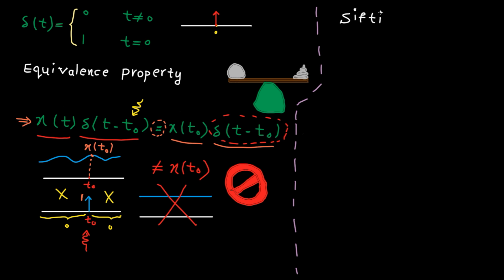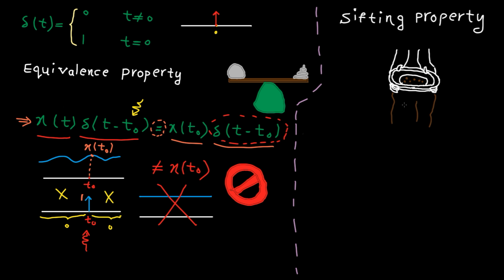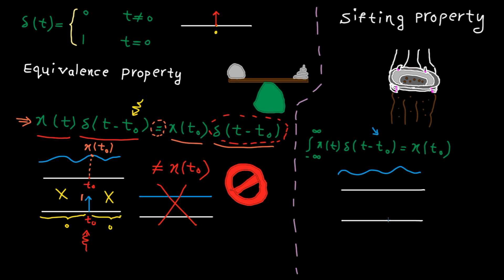Now let's look at the second property of the unit impulse function: the sifting property. As the name shows, you can use this property to sift out some parts of a signal. The integral from minus infinity to plus infinity of x of t multiplied by a delta function shifted by t0 is equal to x at t0. Here is x of t, and here is a delta function shifted by t0. Again, the product is zero everywhere except at one point, t equal to t0, where the product is x at t0 multiplied by 1, giving x(t0).